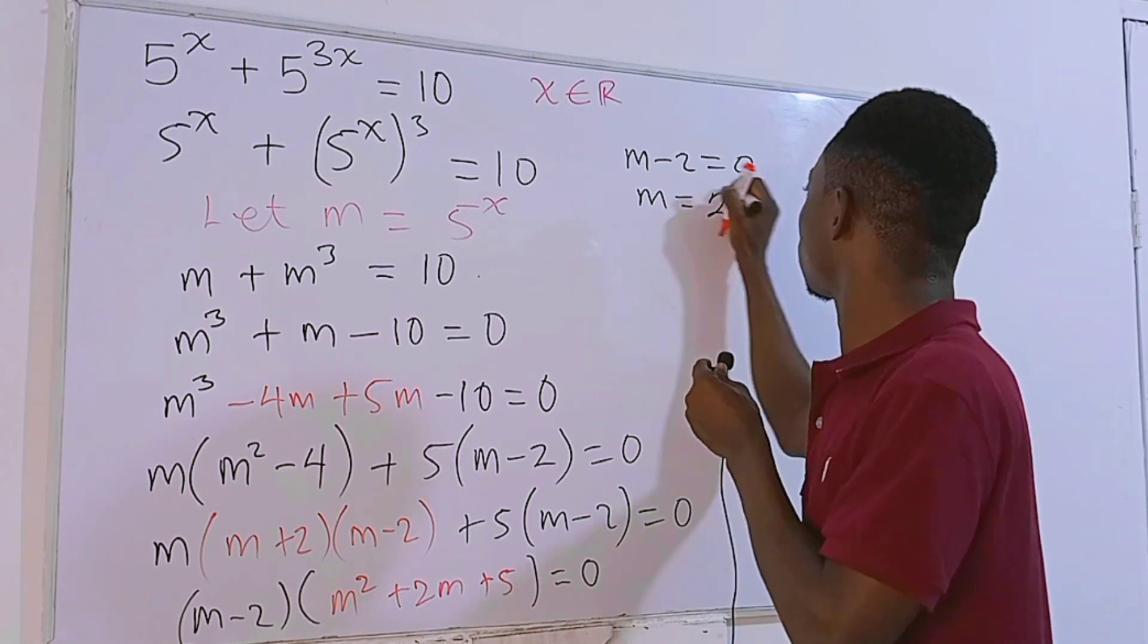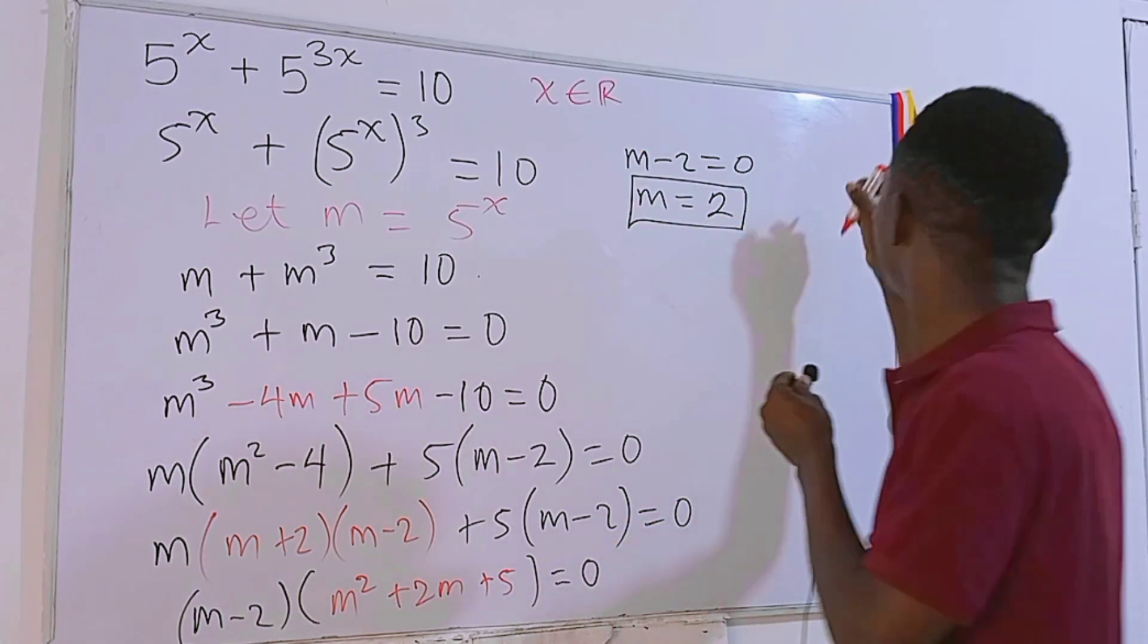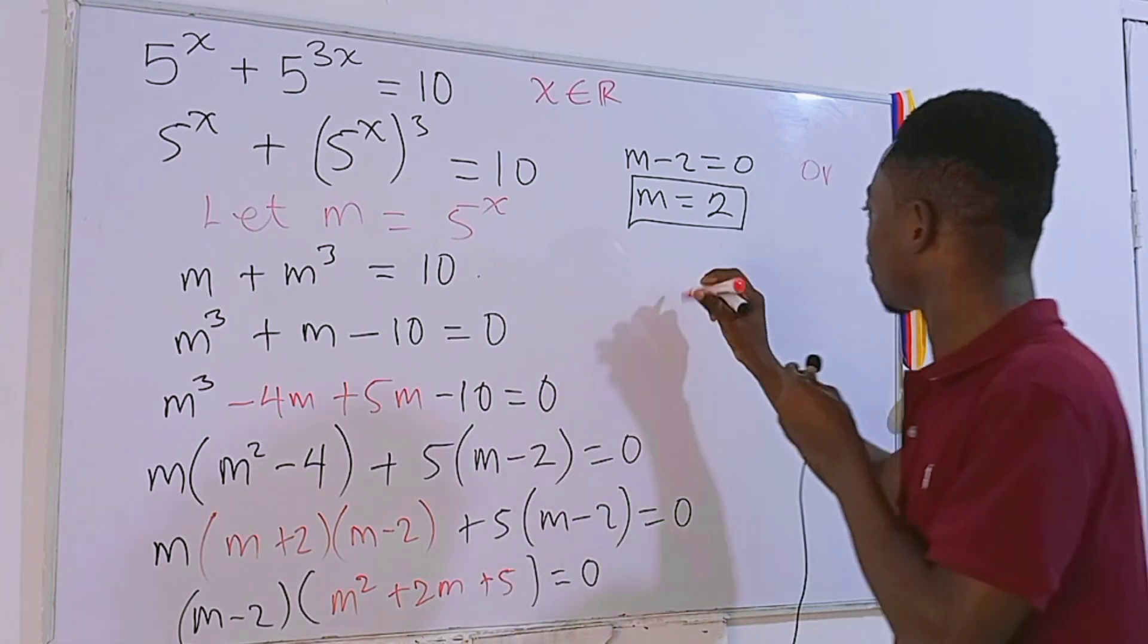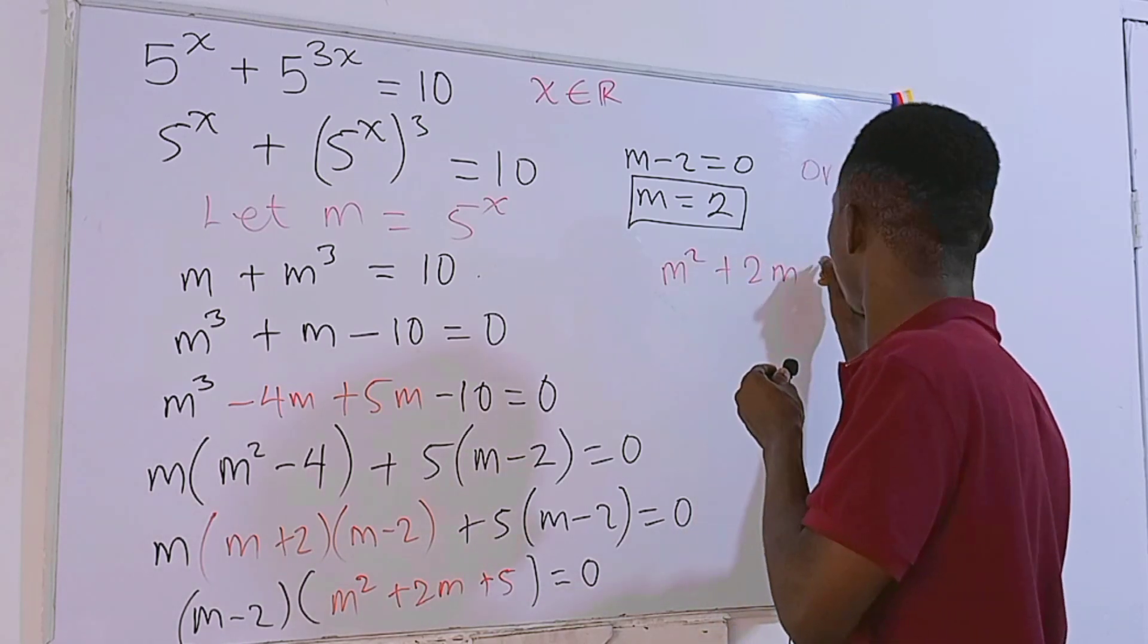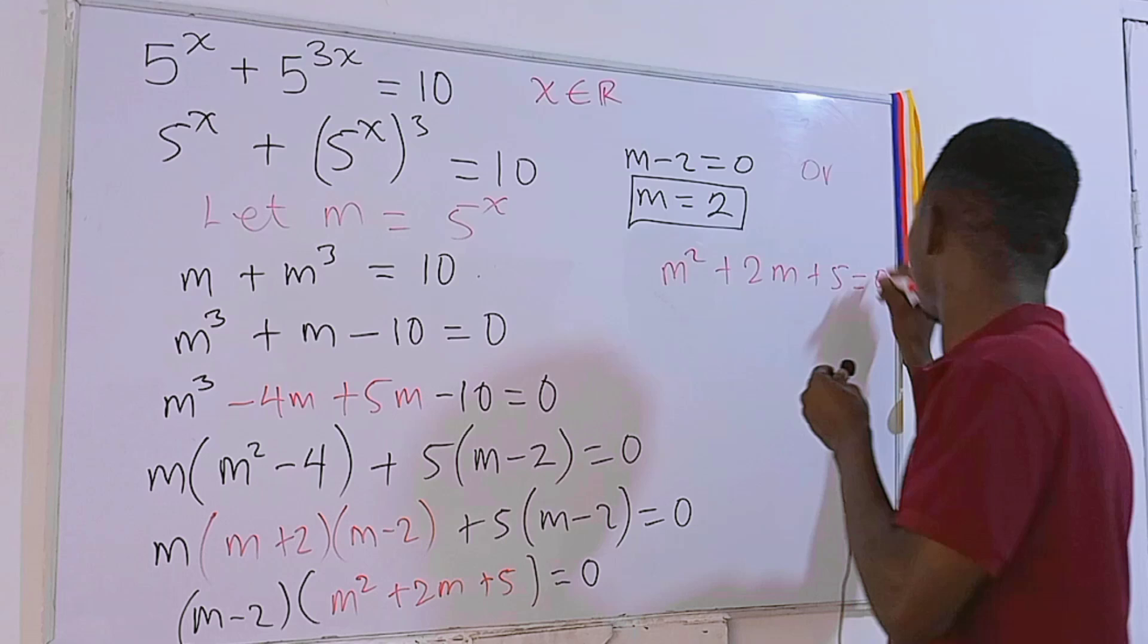Or we have this, which is m² + 2m + 5 = 0.